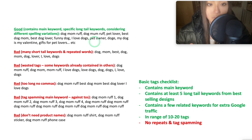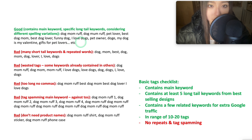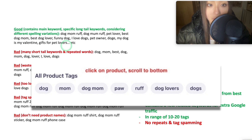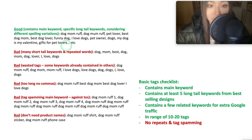If you want to know how I find those main keywords, watch my niche research video. In this example I'm using 'dog mom rough' — it's not the best keyword since the dogs niche is really saturated, but it's just an example. For tags, I search for the main keyword on Redbubble, sort by best selling, and see which tags the best sellers are using, then copy those tags so each of mine is unique.